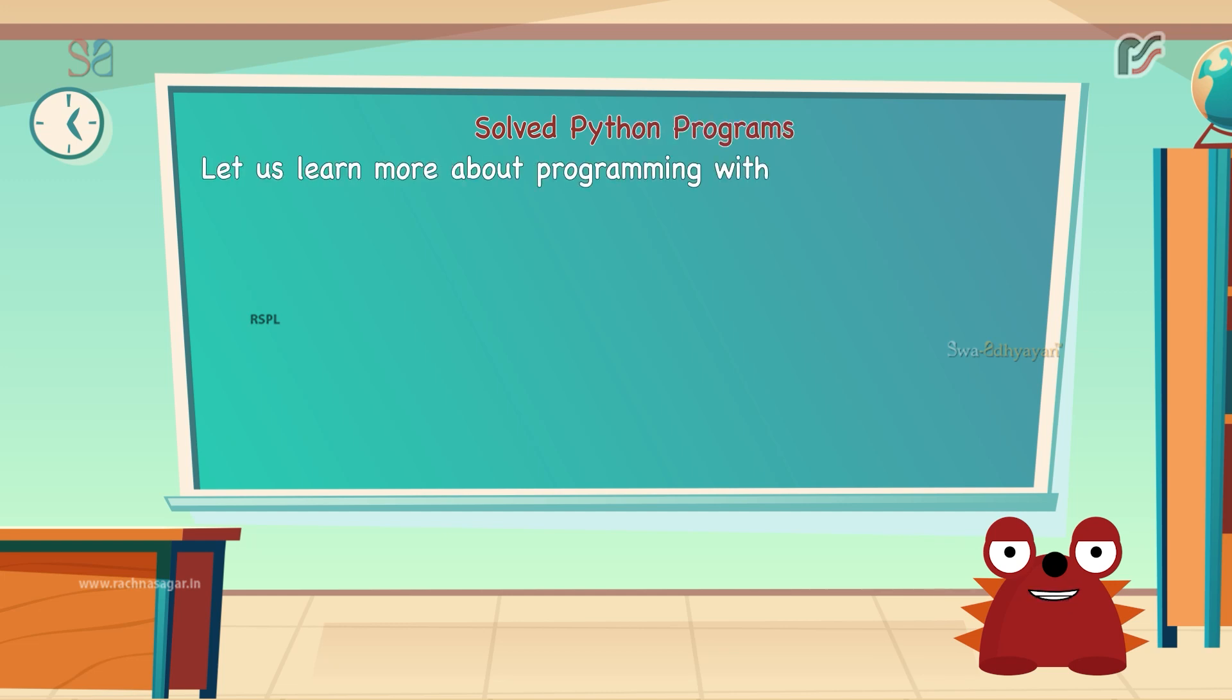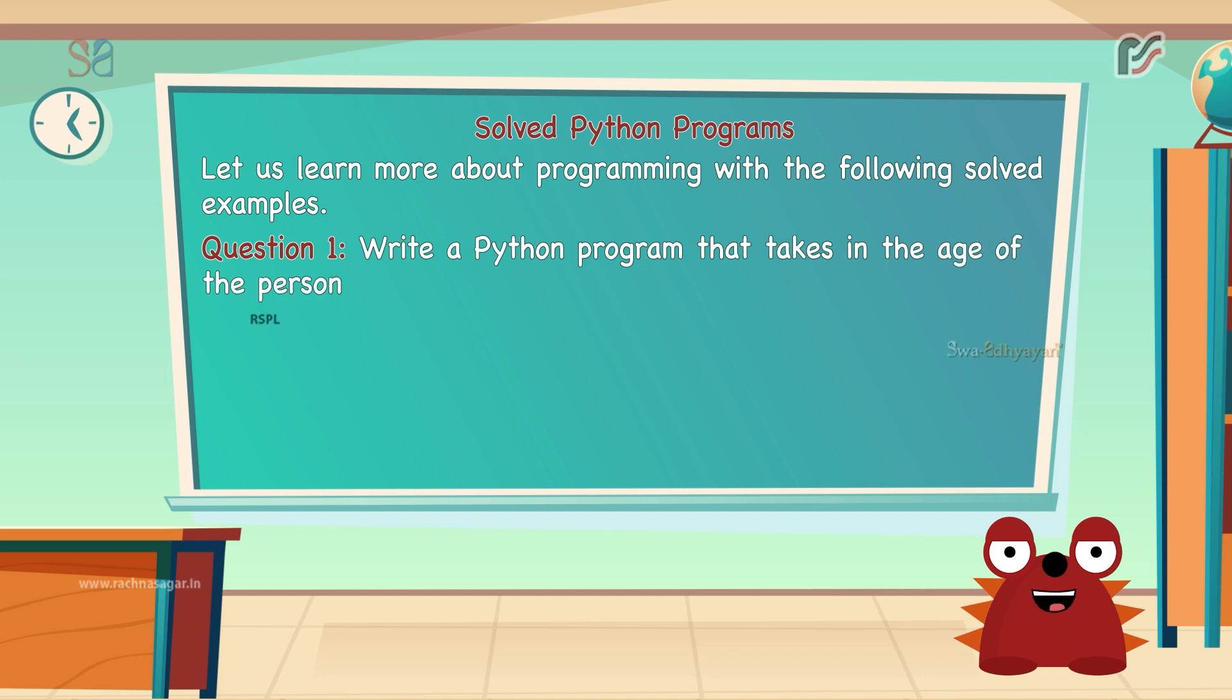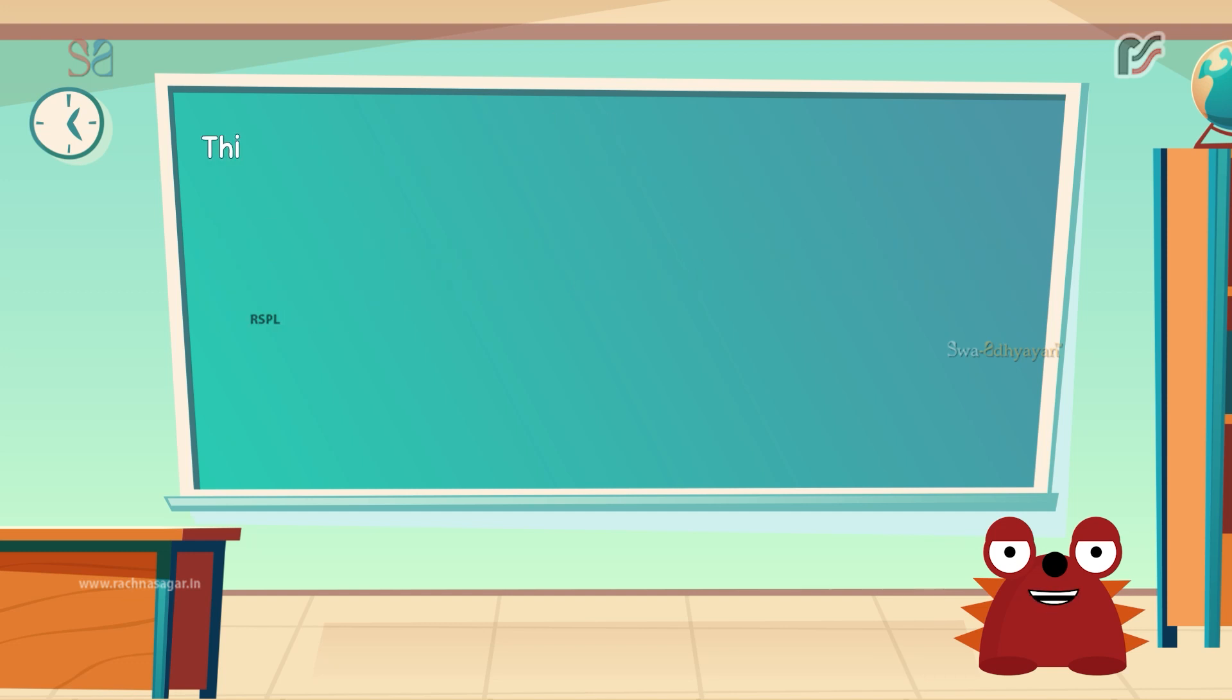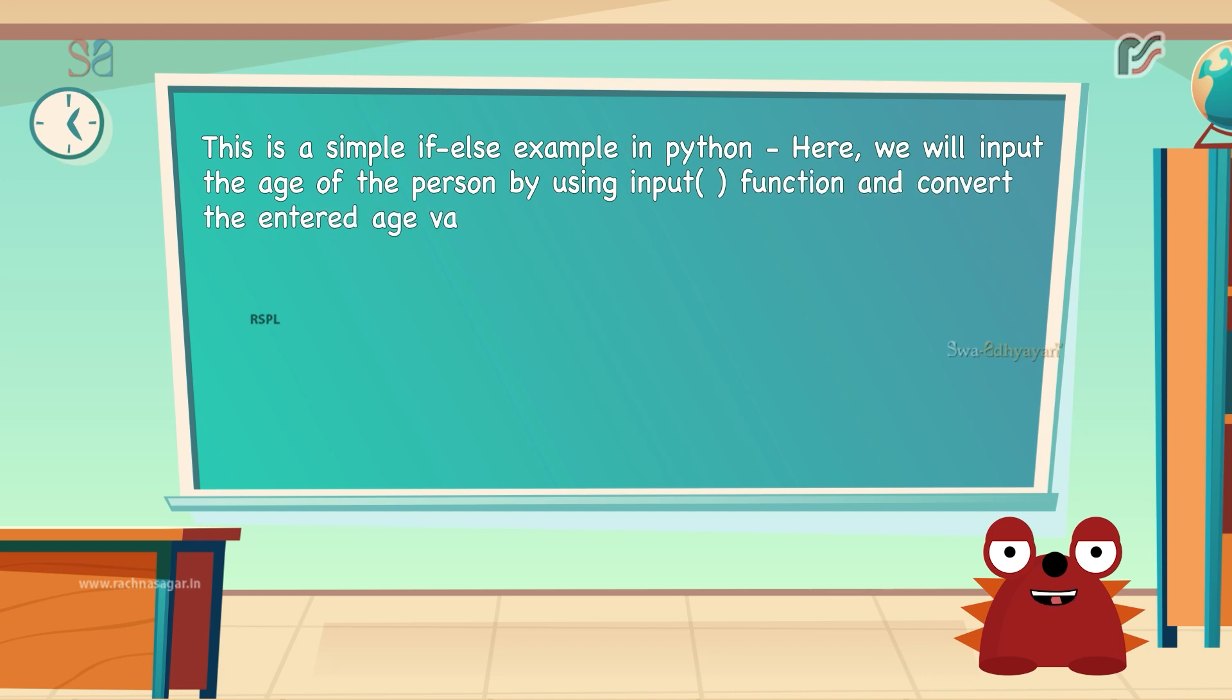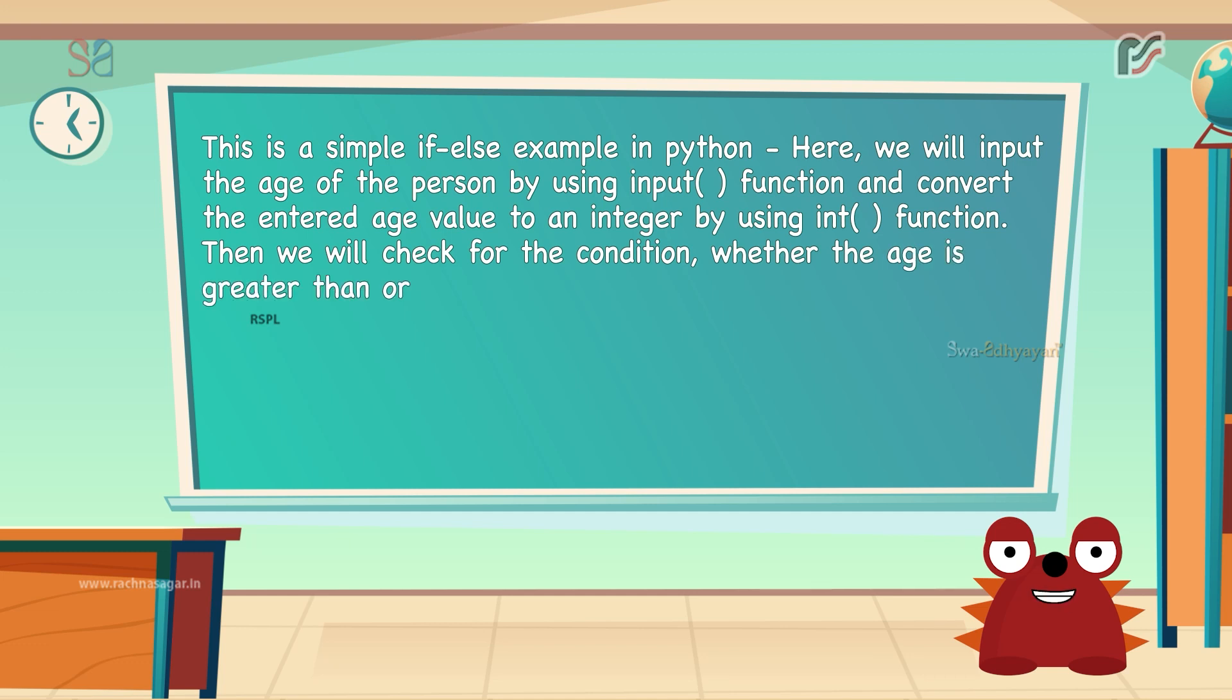Let us learn more about programming with the following solved examples. Question 1 is to write a Python program that takes in the age of the person as an input and checks whether a person is eligible to vote or not. This is a simple if-else example in Python. Here, we will input the age of the person by using input function and convert the entered age value to an integer by using int function. Then, we will check for the condition whether the age is greater than or equal to 18 or not. If the age is greater than or equal to 18, the person will be eligible for voting.